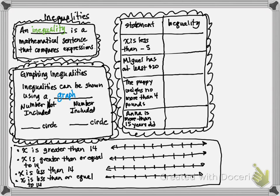Here comes the really important piece. Number not included: let's say we aren't going to have the number in our inequality as a solution — what we do is something called an open circle. At that number, the constant, we have a circle that's open. Number included would be called a closed circle — when it's closed up and filled in, that means that number is one of the solutions.